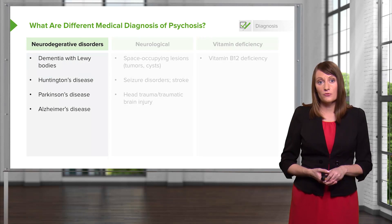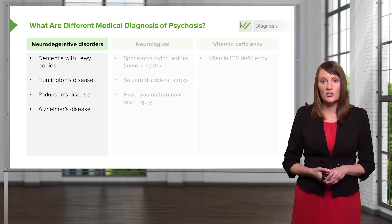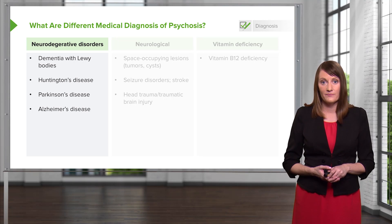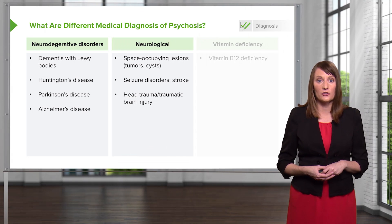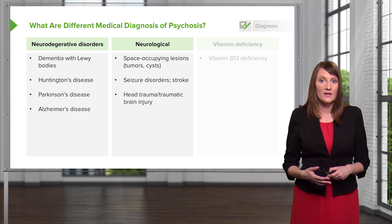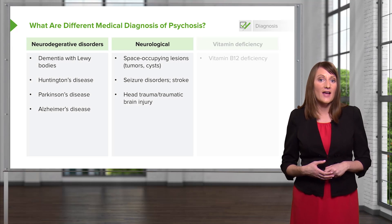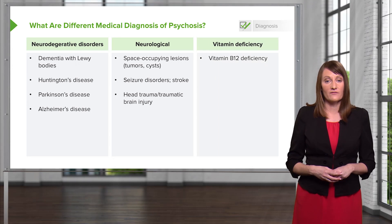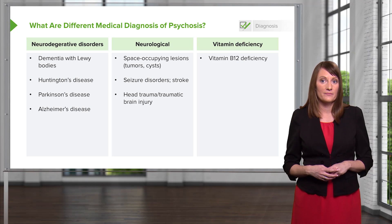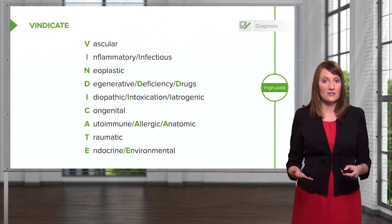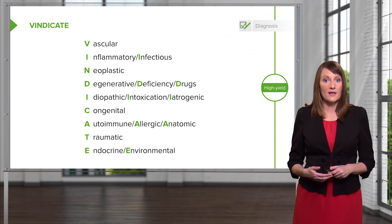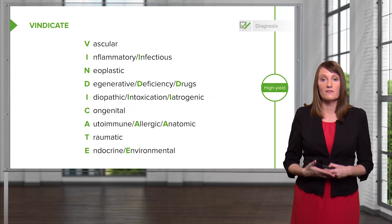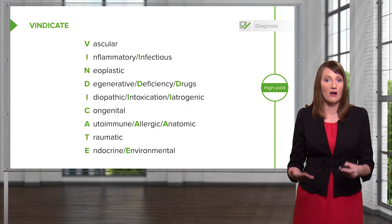Other things to rule out are neurodegenerative diseases such as Lewy body dementia, Huntington's disease, Parkinson's, and Alzheimer's. Neurological conditions include space-occupying lesions like a tumor, seizure disorder, stroke, and any kind of head injury or trauma to the brain. Finally, rule out vitamin deficiency, especially B12. Because this is a long list, there is a summary acronym that may be useful in thinking about what categories of medical conditions can present as a psychotic disorder.